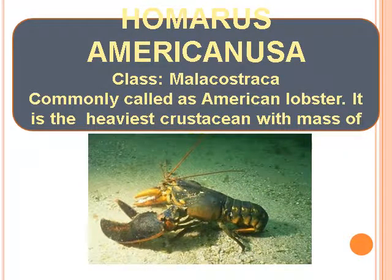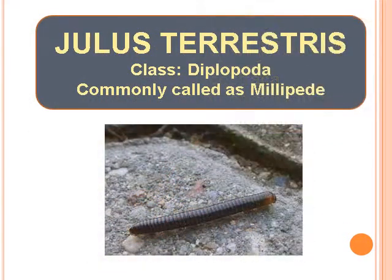Homarus Americanus — Class Malacostraca, commonly called as American Lobster. It is the heaviest crustacean with a mass of over 20 kg. Julus Terrestris — Class Diplopoda, commonly called as Millipede.